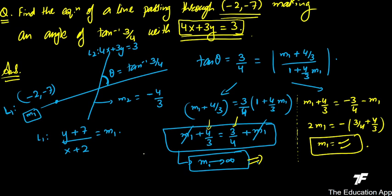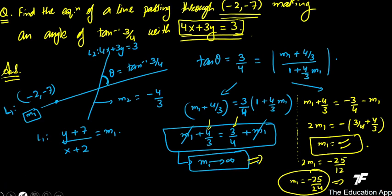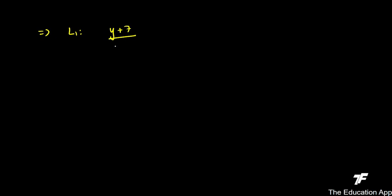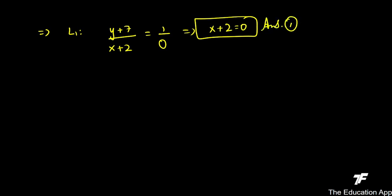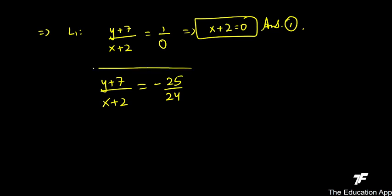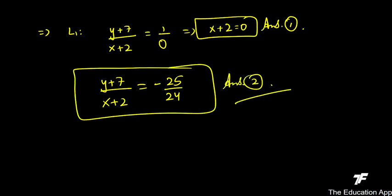One value of M1 is infinity, giving the answer x + 2 = 0 (this is answer 1). For the second case using minus 3/4: 2M1 = -3/4 + 4/3 = (-9 + 16)/12 = 7/12... giving M1 = -25/24. Therefore answer 2 is: (y + 7)/(x + 2) = -25/24.